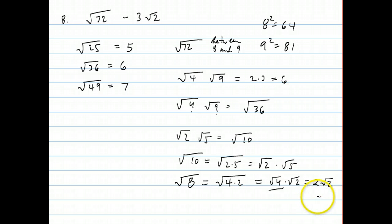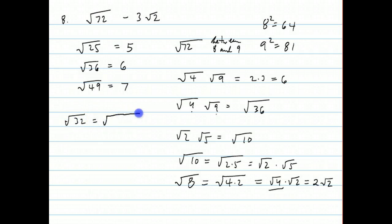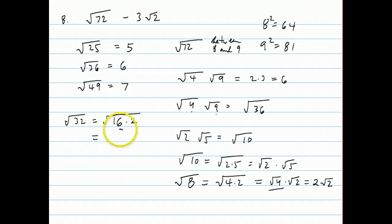What we try to do when we see a number like the square root of 32 is we try to break 32 up in such a way that we factor it so that one of the factors is a perfect square, like 16. And if you can do that, you can rewrite this as the square root of 16 times 2, times the square root of 2, which is 4 root 2.